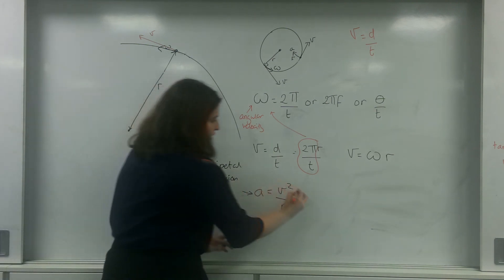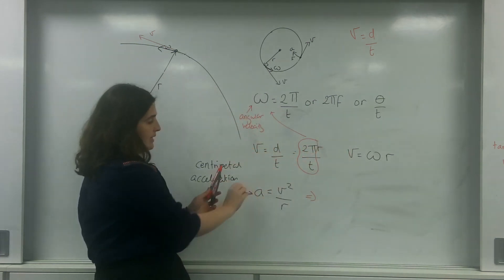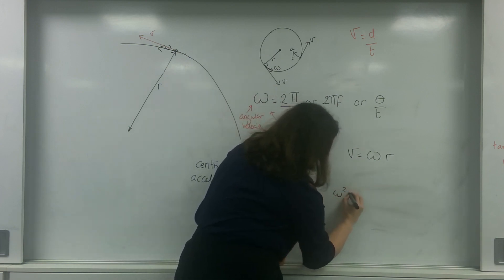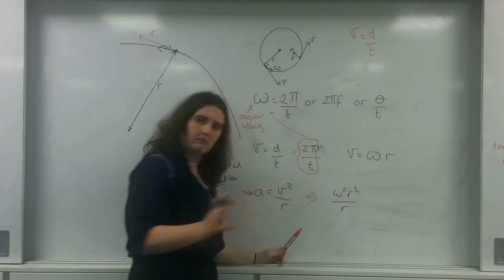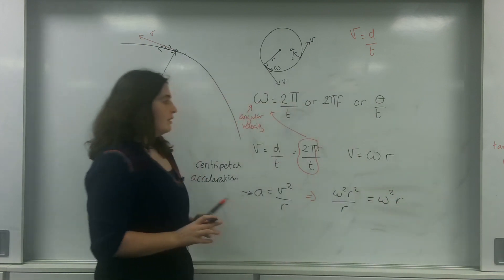I can then, if I wish to, find this formula here. I can stick this formula that I solved up here into this. And I could have ω²r² over r, which would leave me with ω²r.